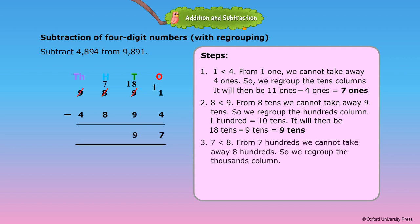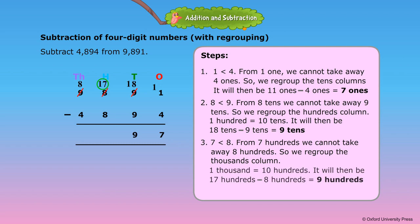Step 3: 7 is less than 8. From 7 hundreds, we cannot take away 8 hundreds, so we regroup the thousands column. 1,000 is equal to 10 hundreds. It will then be 17 hundreds minus 8 hundreds is equal to 9 hundreds.